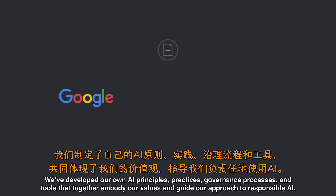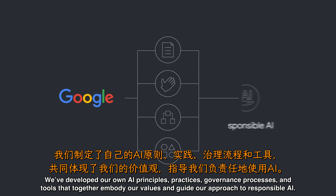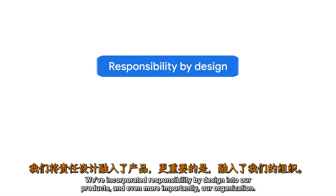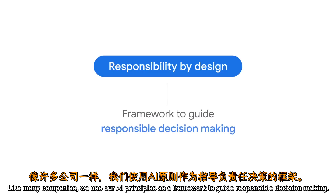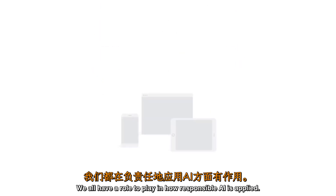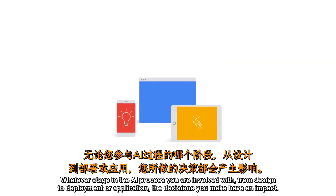We've developed our own AI principles, practices, governance processes, and tools that together embody our values and guide our approach to responsible AI. We've incorporated responsibility by design into our products and, even more importantly, our organization. Like many companies, we use our AI principles as a framework to guide responsible decision-making. We all have a role to play in how responsible AI is applied — whatever stage in the AI process you're involved with, from design to deployment or application, the decisions you make have an impact.